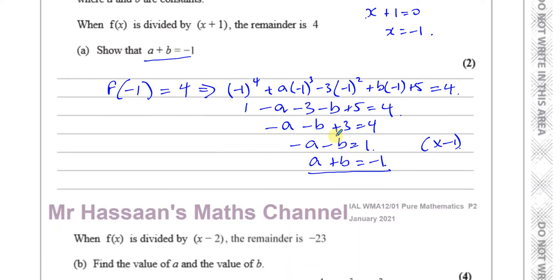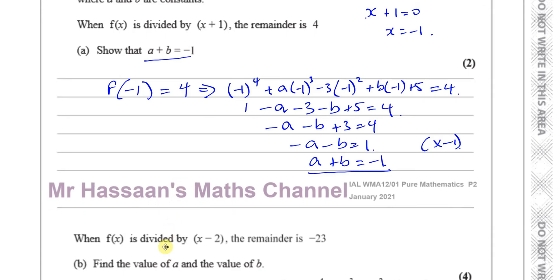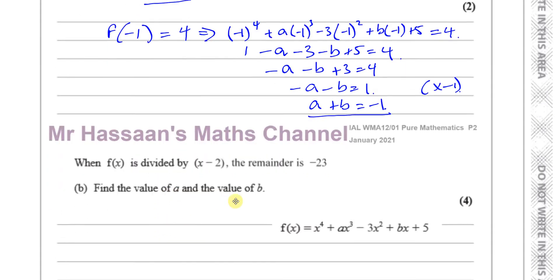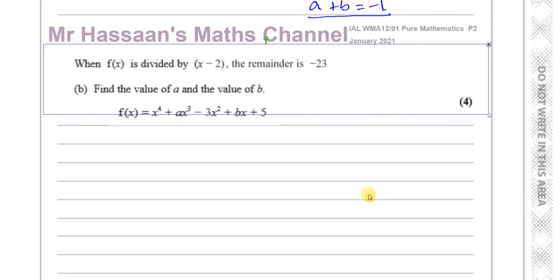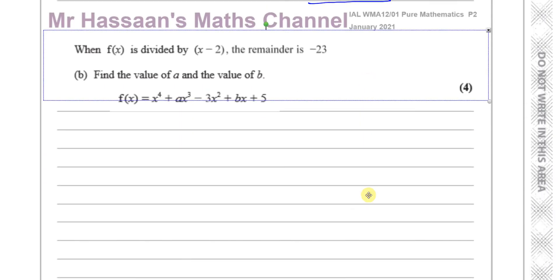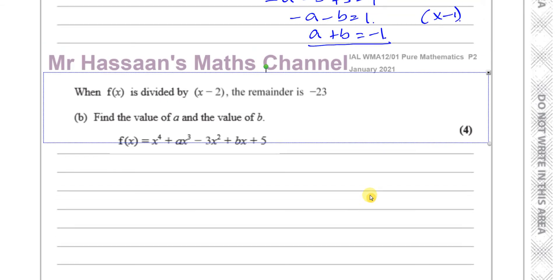So part b, it says when f(x) is divided by (x - 2), the remainder is -23. Find the value of a and the value of b.